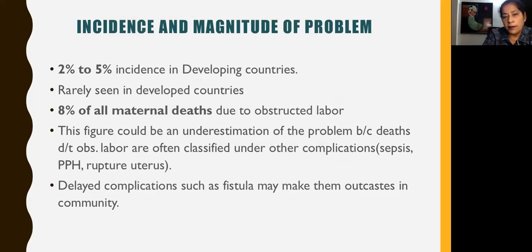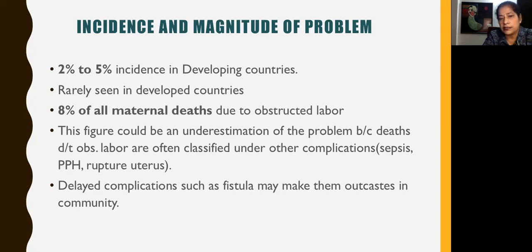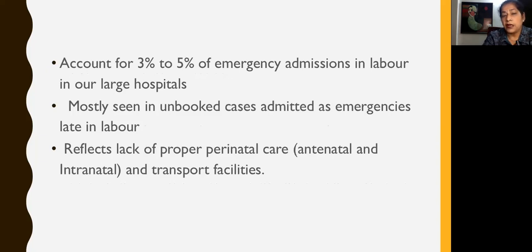However, 8% of all maternal deaths in developing countries are due to obstructed labour. This figure could be an underestimation because deaths due to obstructed labour, if not identified earlier, could be labelled under other causes like sepsis, PPH, or ruptured uterus — which are in fact complications of obstruction itself. Delayed complications can occur such as fistula formation, which may result in extreme morbidity. Obstructed labour accounts for 3–5% of emergency admissions in large hospitals, mostly in unbooked cases admitted as emergencies in late labour, reflecting lack of proper perinatal care — not only antenatal but intranatal — and lack of transport facilities.